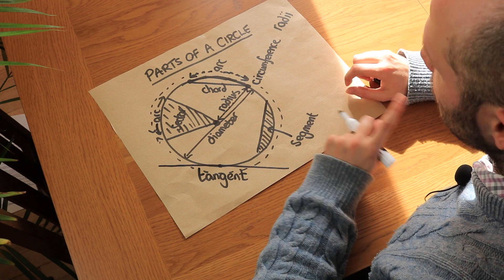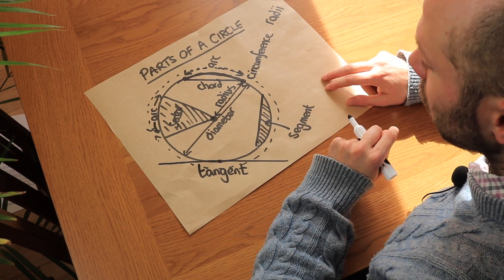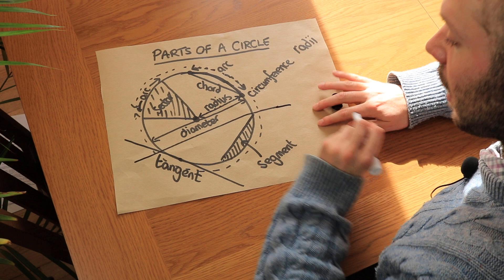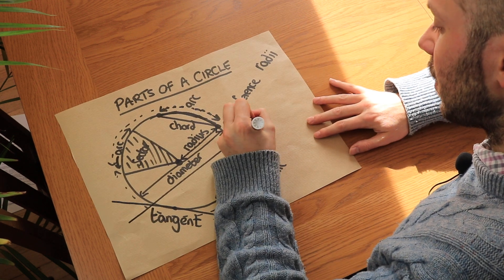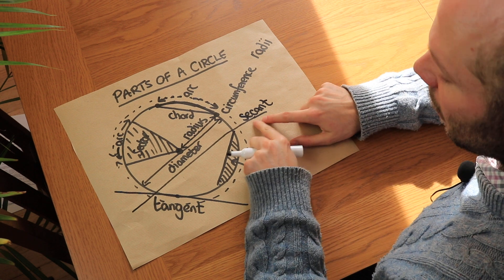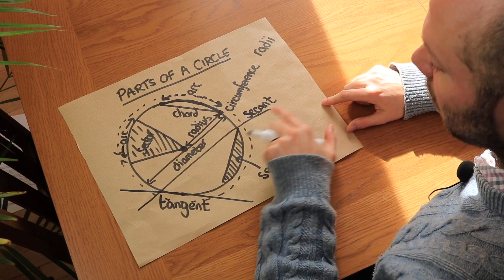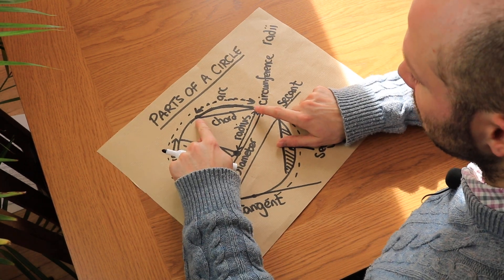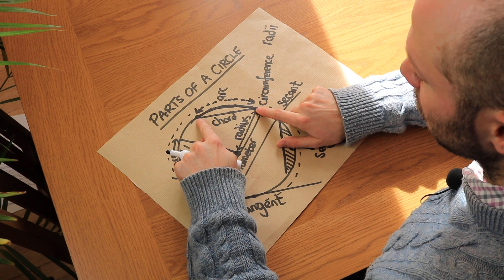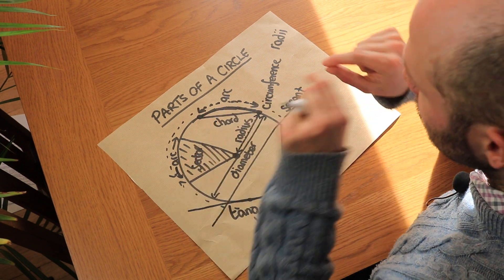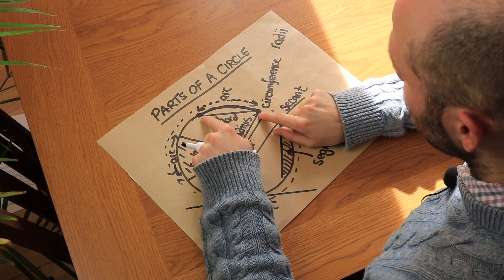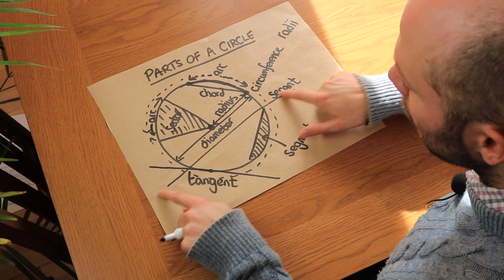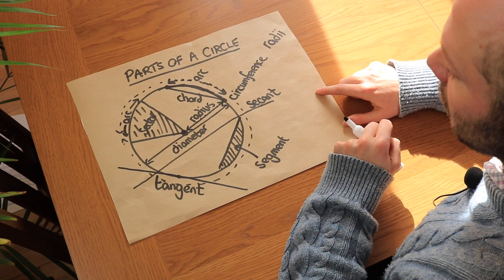There's one extra term you need to know for IGCSE, but not for normal GCSE. If a line cuts through the circle, that is known as a secant. A secant is a line which cuts the circle. That's different from a chord — the chord stops at the two points on the circumference and is a line segment, which is finitely long. The secant, however, can be infinitely long, extending beyond the circle in both directions.